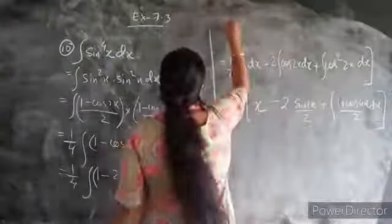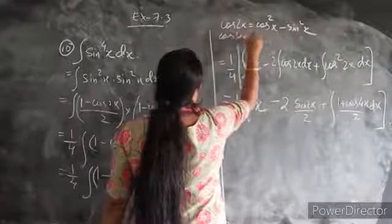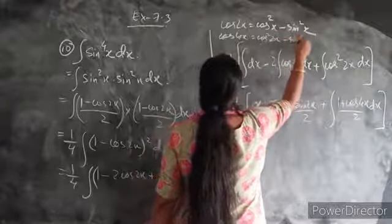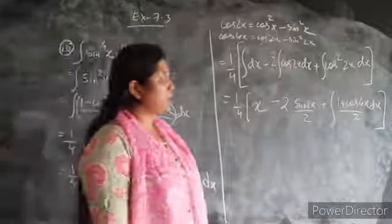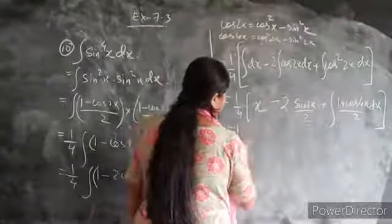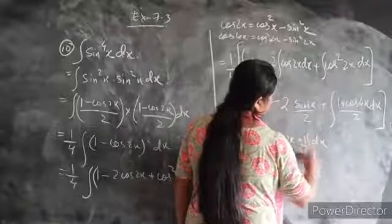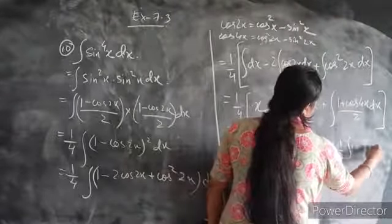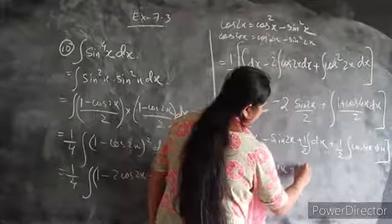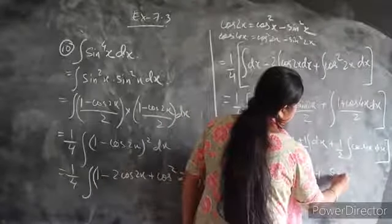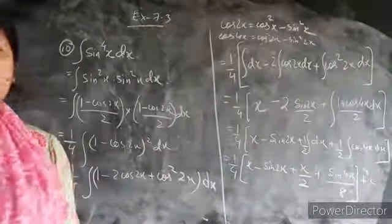For cos²2x, we recall that cos²x minus sin²x gives cos2x, and cos²2x minus sin²2x gives cos4x. So cos²2x equals (1 plus cos4x)/2. Integrating each part, the final answer is: x minus sin2x plus x/2 plus sin4x/8 plus c. This is the answer of question number 10.